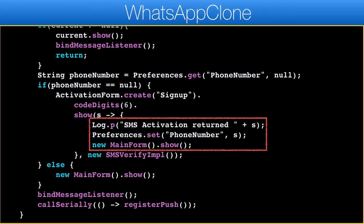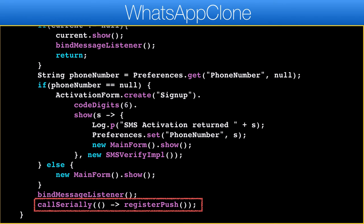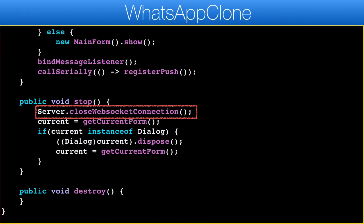The first argument is a callback that's invoked when the activation is completed, invoked with a phone number in the result. Here we install the new phone number to the preferences then show the main form UI. If the user was already registered we show the main form directly. The last piece is the register push call, which is an essential part of push notification support. Finally, we added close web socket code to the stop method, which implements the logic of stopping the web socket connection when the app is minimized.